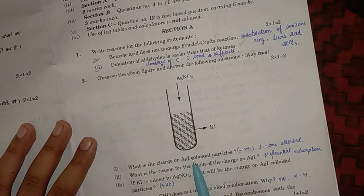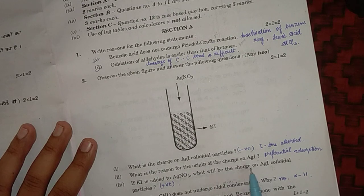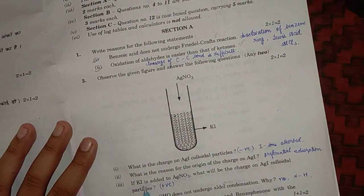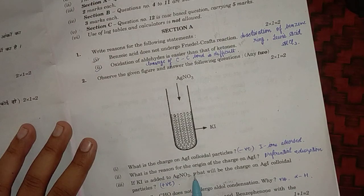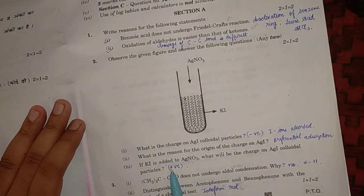Third is: if KI is added to AgNO3, what will be the charge on AgI colloidal particles? If KI is added, means AgNO3 is in excess, so here the charge will change and it will become positive.